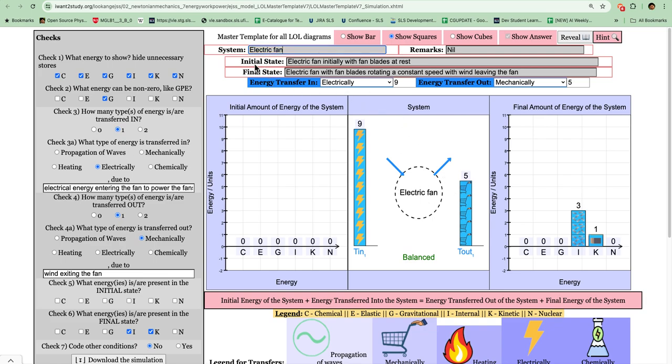Okay, and then you have to key in the initial state of the energy. So in this case, these are all the various energies. So you may want to check out this check one: What energies to show? If any are unnecessary.